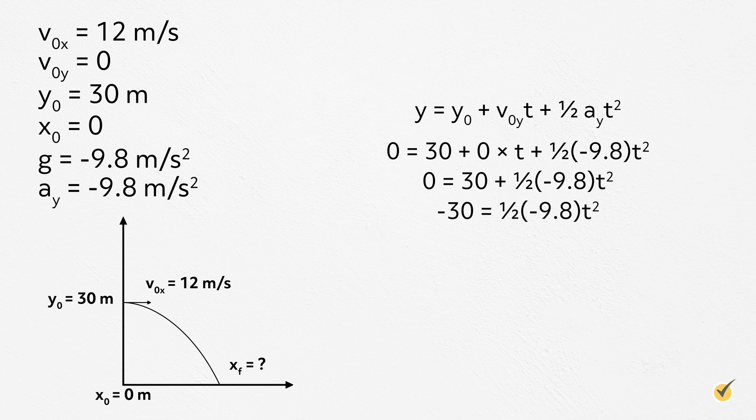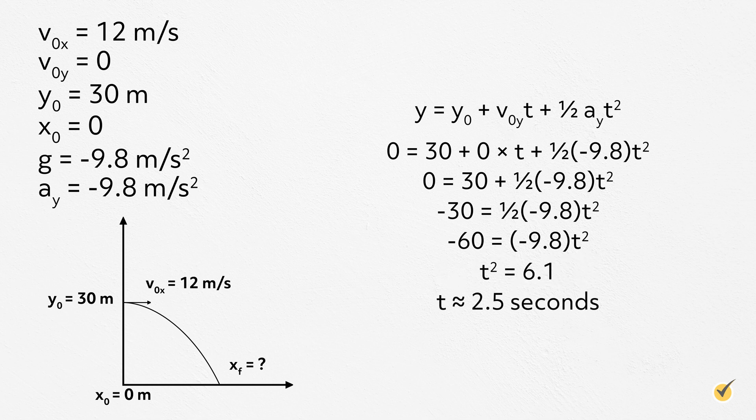First, subtract 30 from both sides of the equation. To get rid of the 1 half, just multiply both sides by 2. Then, divide both sides by negative 9.8. Then, just take the square root of both sides to get t equals approximately 2.5 seconds. This seems like a reasonable answer. It should only take a few seconds for a ball to fall 30 meters.